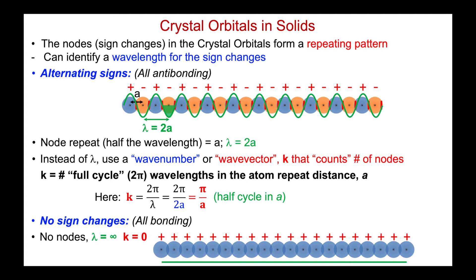At the other extreme, where there are no sign changes, for s orbitals that means all of the overlaps are in phase — it's an all-bonding repeat. If there are no sign changes, there are no nodes, and so the wavelength is effectively infinity. In terms of k, there are no wavelengths within the atom repeat because it has an infinite wavelength. So this arrangement — where I'm just adding every single atomic wave function — gives k = 0. My values of k can range from zero (all-bonding) to k = π/a (alternating signs, all anti-bonding).